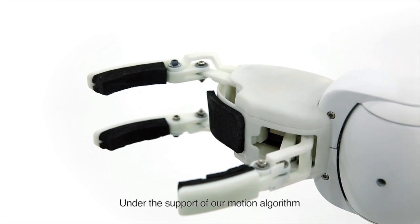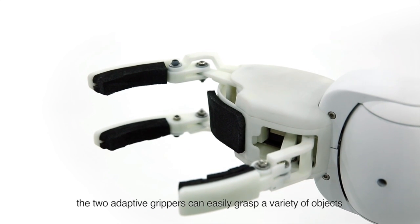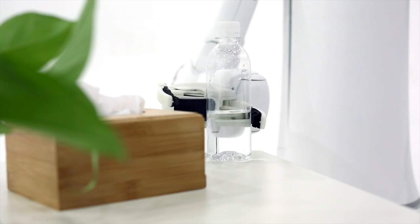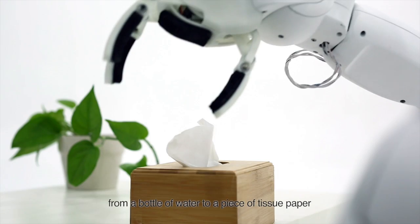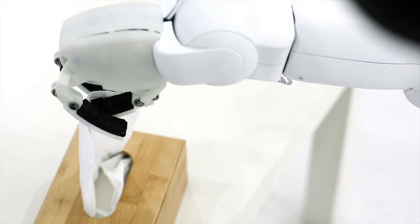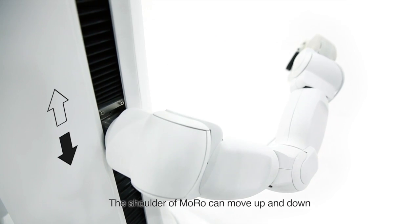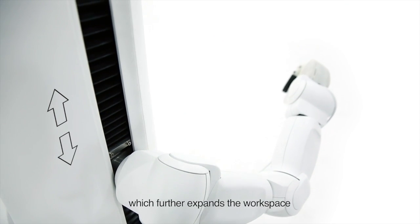Under the support of our motion algorithm, the two adaptive grippers can easily grasp a variety of objects, from a bottle of water to a piece of tissue paper. The shoulder of Moro can move up and down, which further expands the workspace.